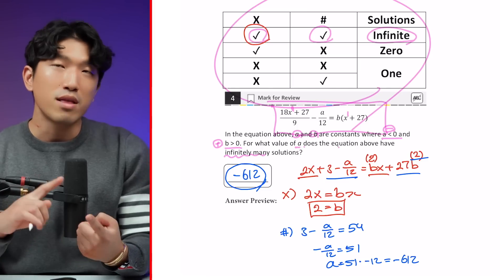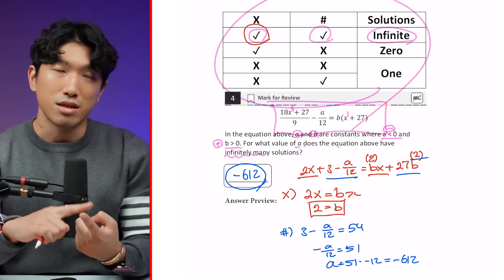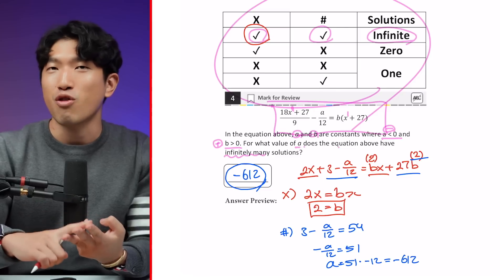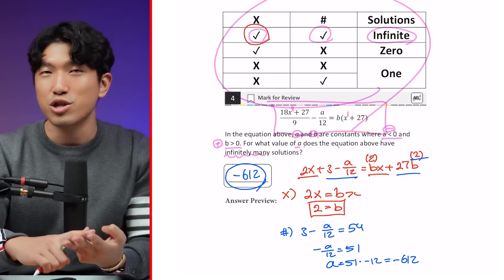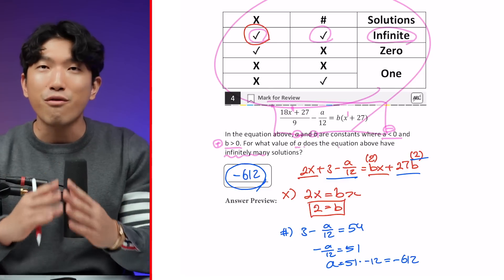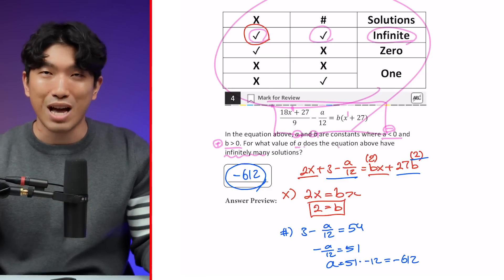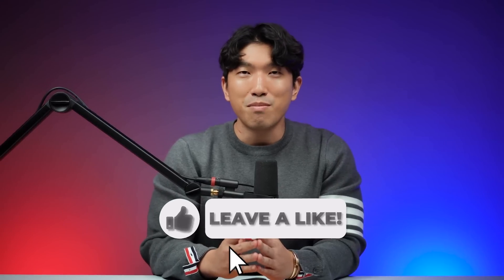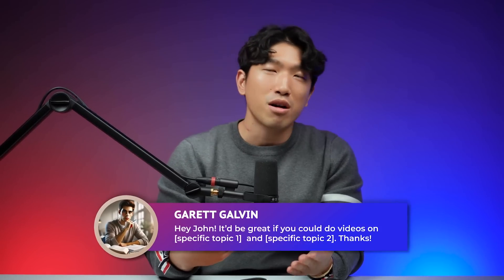No matter how intimidating the question looks, if you're working with one equation and the highest exponent is 1, simply use the matching rule to get the answer. Memorize the table, understand the logic behind it, and try the additional practice questions. If you can get those, you'll never miss any of these question types on your next SAT. If you found this video helpful, give it a thumbs up and leave any questions or video requests in the comments.